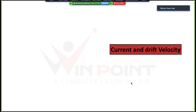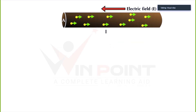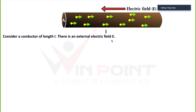Current and drift velocity — this is a very important relation. We are considering a conductor where the direction of drift velocity, the direction of current, and the direction of electric field are indicated. The length of the conductor is L, the area of cross section is A, and there is an external electric field E. You can draw the diagram and start writing the explanation.